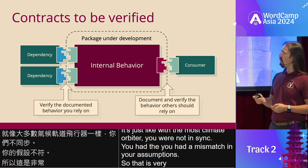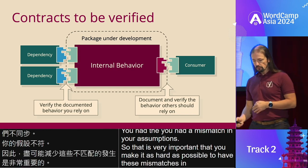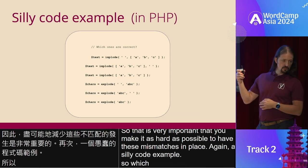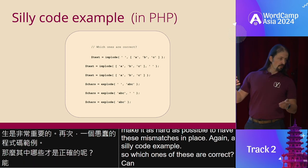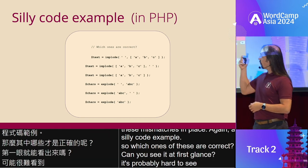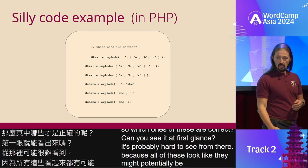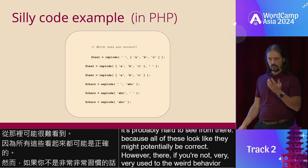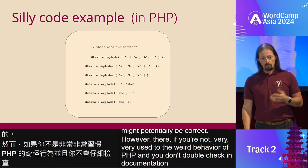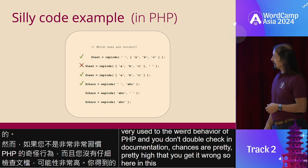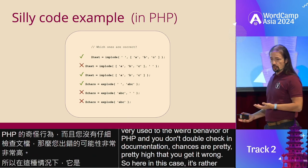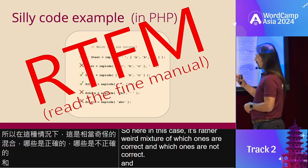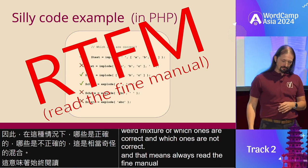Here's a silly code example — which ones of these are correct? It's probably hard to see from there, because all of them look like they might potentially be correct. However, if you're not very used to the weird behavior of PHP and you don't double-check documentation, chances are pretty high that you get it wrong. It's a rather weird mixture of which ones are correct and which ones are not. Always read the fine manual, please. It's very important.